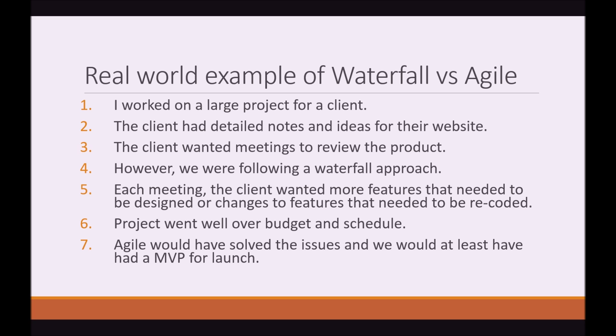If we were working with the agile scrum method, it would have solved so many issues. The first thing that would have happened is at least we would have had a MVP for launch. Now MVP stands for minimal viable product. And at the time of launch, they had a product that wasn't really a working product. Stuff was half done. Stuff was being changed. It was just a complete mess. But with agile, with picking and choosing features, especially the most important ones first, at least we would have had the most important things done and we could have launched with the minimal version of the product that they wanted.